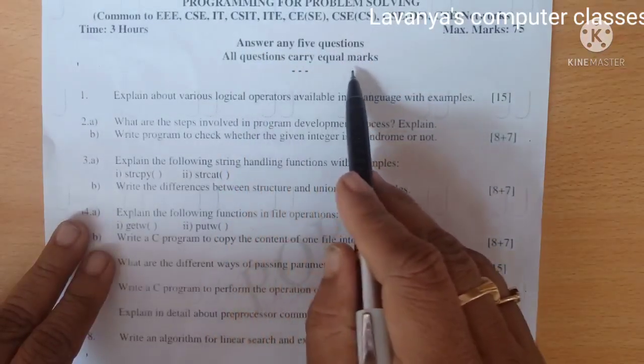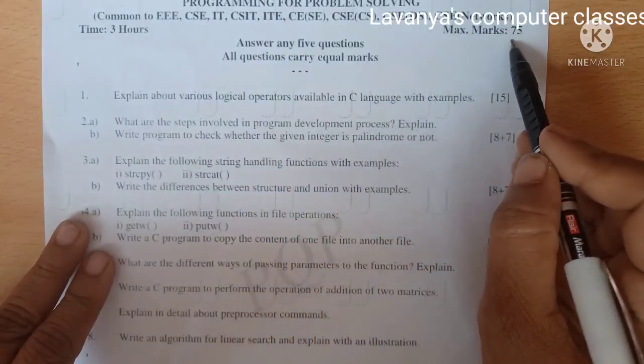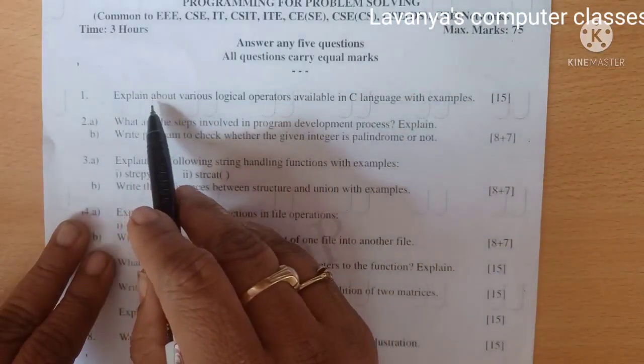This is a COVID pattern. Answer any 5 questions. All questions carry equal marks. Maximum marks is 75.